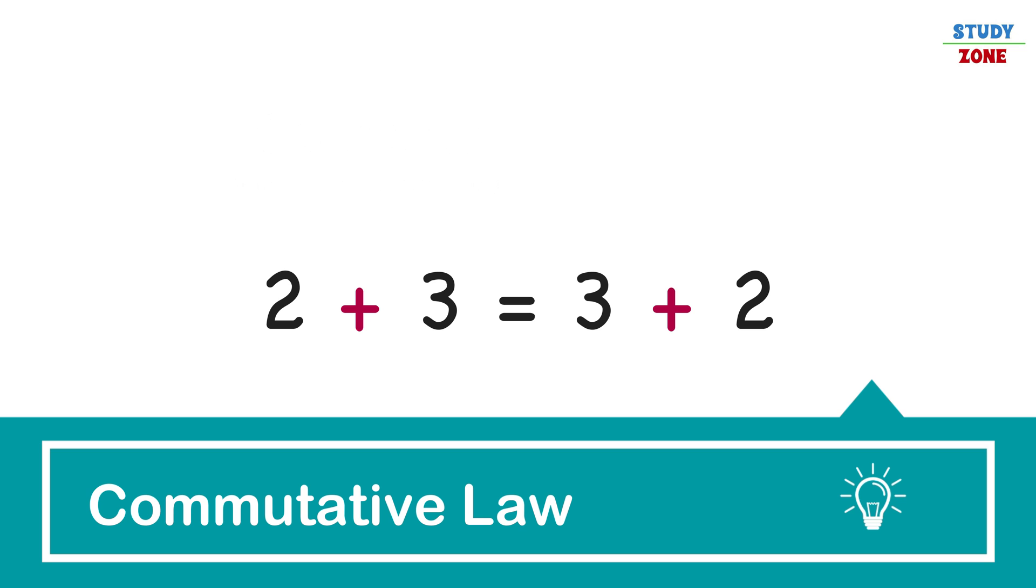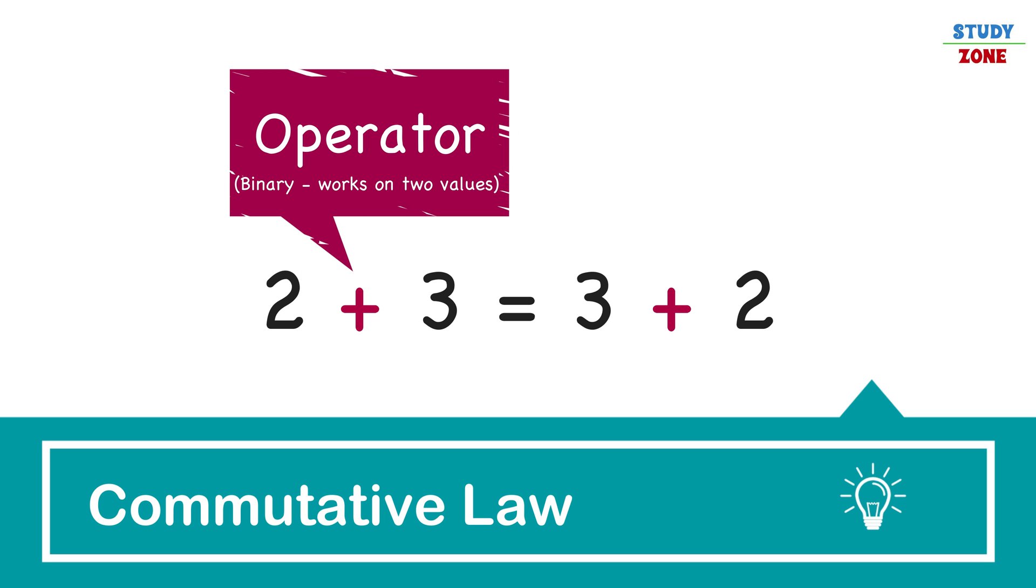Before we talk about this law in detail, let's understand what an operator is. An operator is an entity that performs a specific operation on some values. For example, the symbol plus is a binary operator that adds two numbers. The values 2 and 3 here will be called operands.